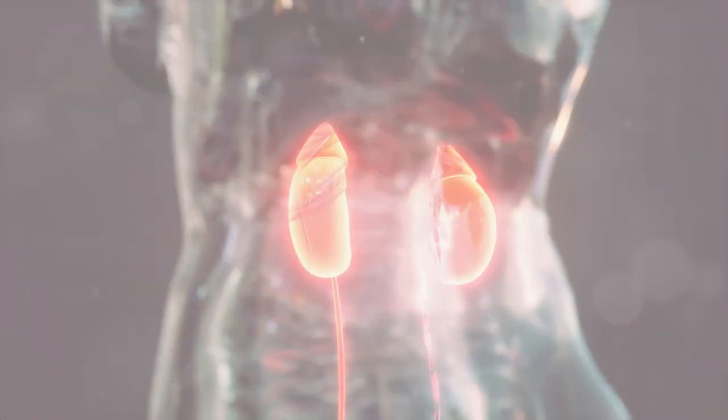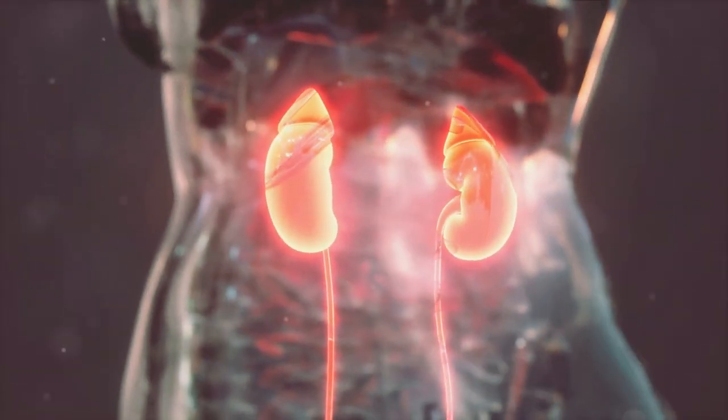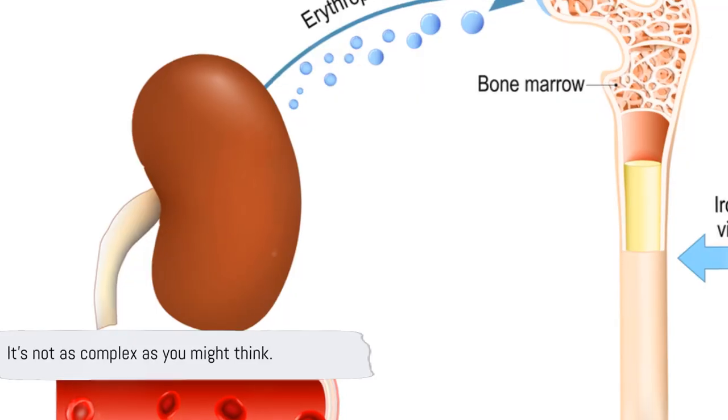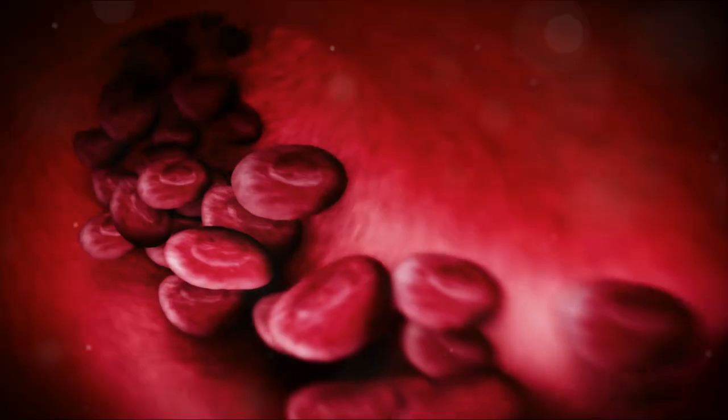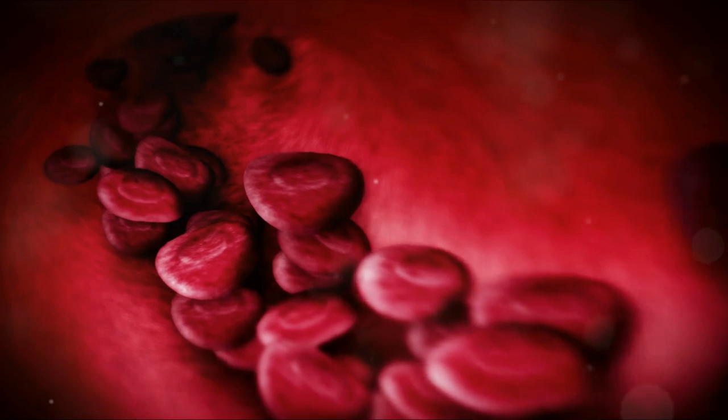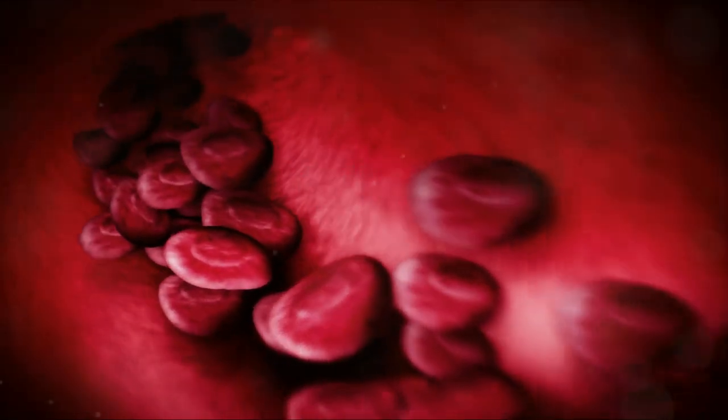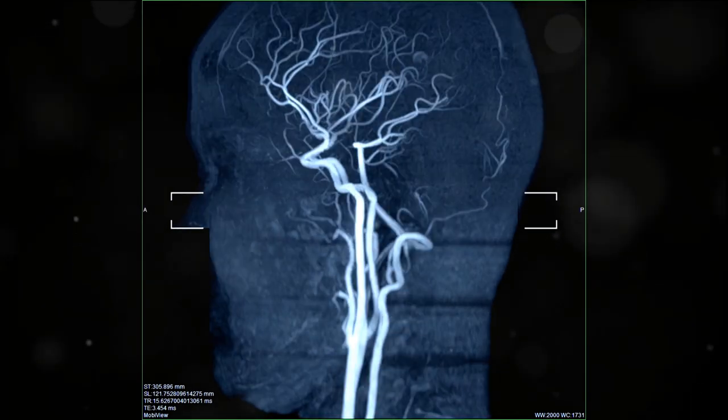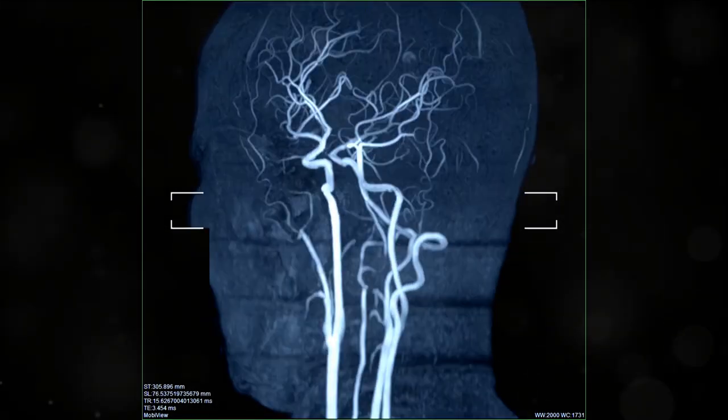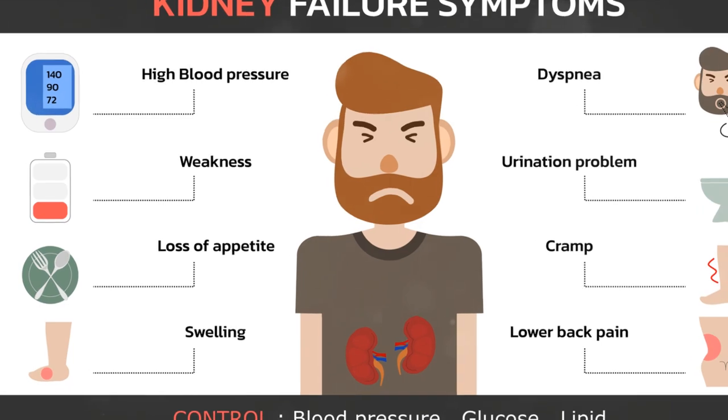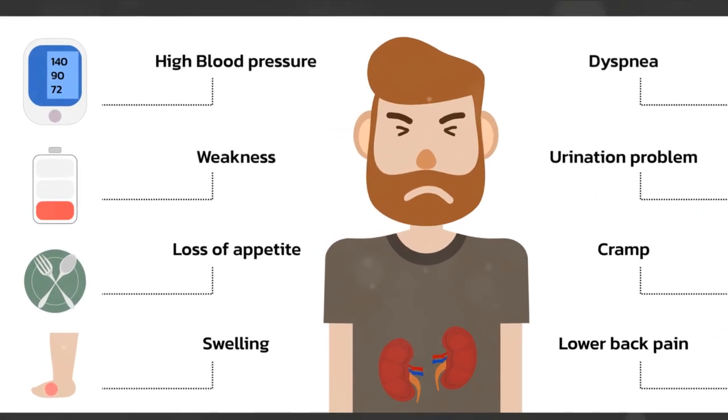The eighth sign, poor concentration and dizziness. So how are your kidneys linked to your brain's performance? It's not as complex as you might think. When your kidneys are not functioning well, they can't produce enough erythropoietin, a hormone that stimulates the production of oxygen-carrying red blood cells. As a result, your body and brain may not get the oxygen they need to function properly.